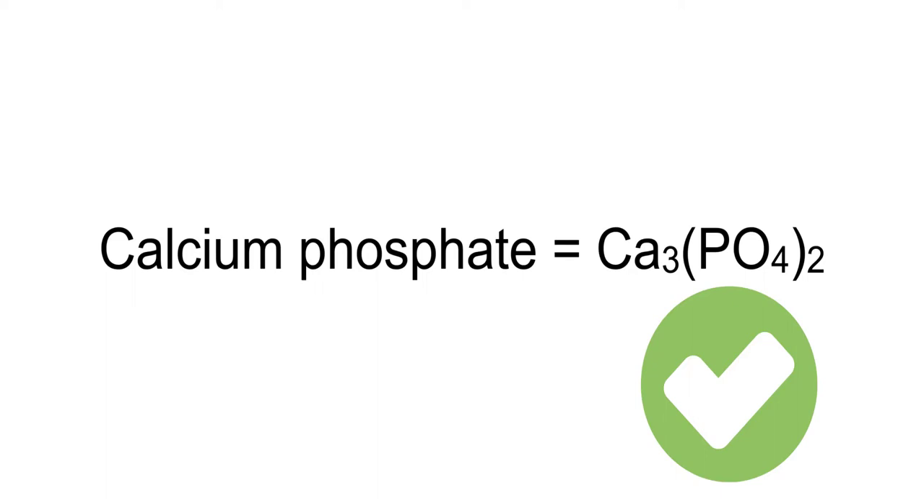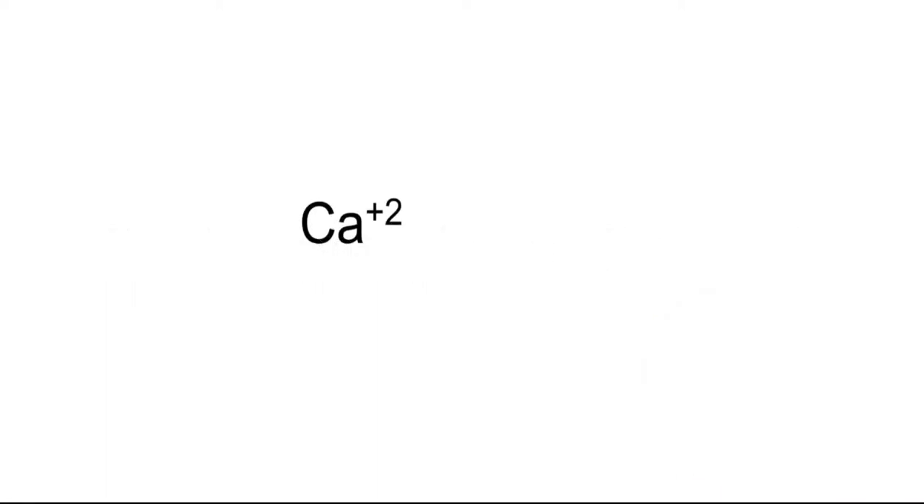Remember, if not, that the calcium ion is +2 and phosphate is -3. Also, you need the parentheses to show how many phosphates you have.